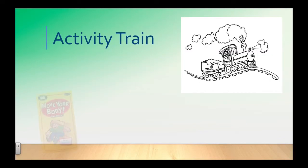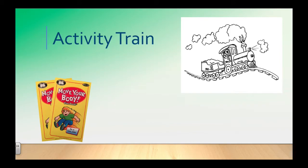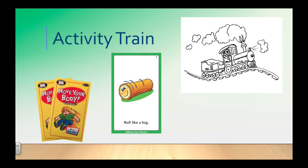To play Activity Train, deal one or two cards face down to each child. Have the first child turn his or her card over and then have all children perform the motor skill activity. Next, have the second child turn a card over. Instruct the group to perform the new activity followed by the first activity. Continue to add a card to the sequence train until the group is unsuccessful.